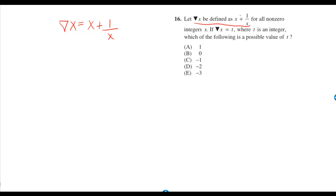Let weird symbol x be defined as x plus 1 over x for all non-zero integers x. If weird symbol x is equal to t, where t is an integer, which of the following is a possible value of t?